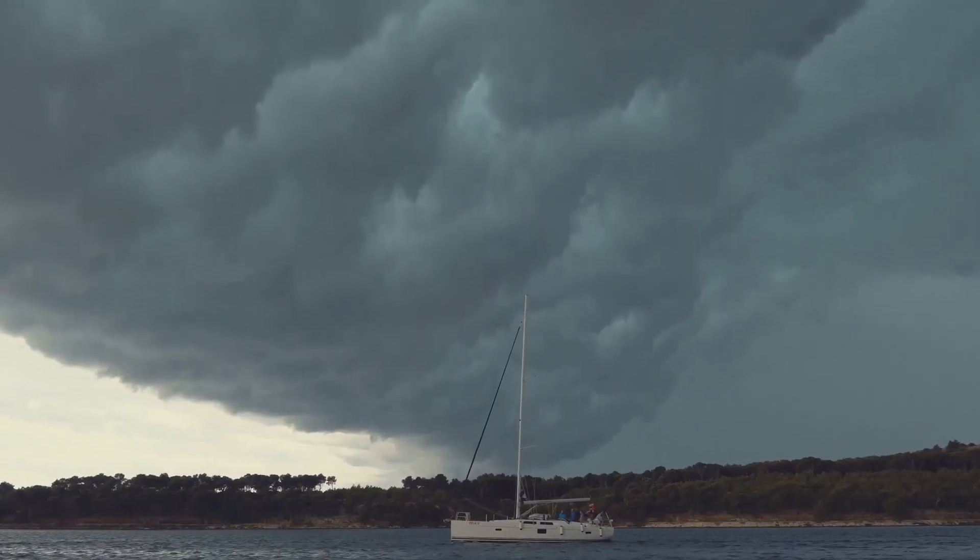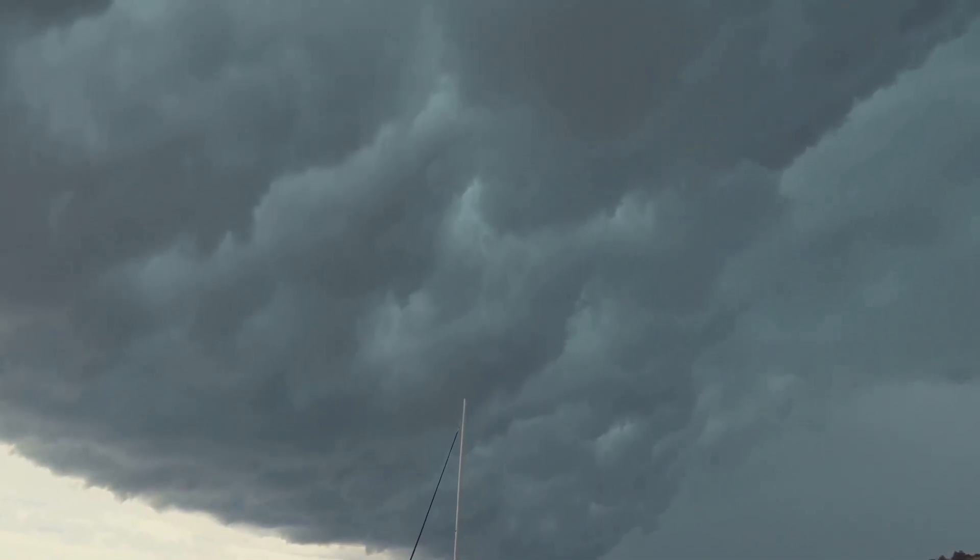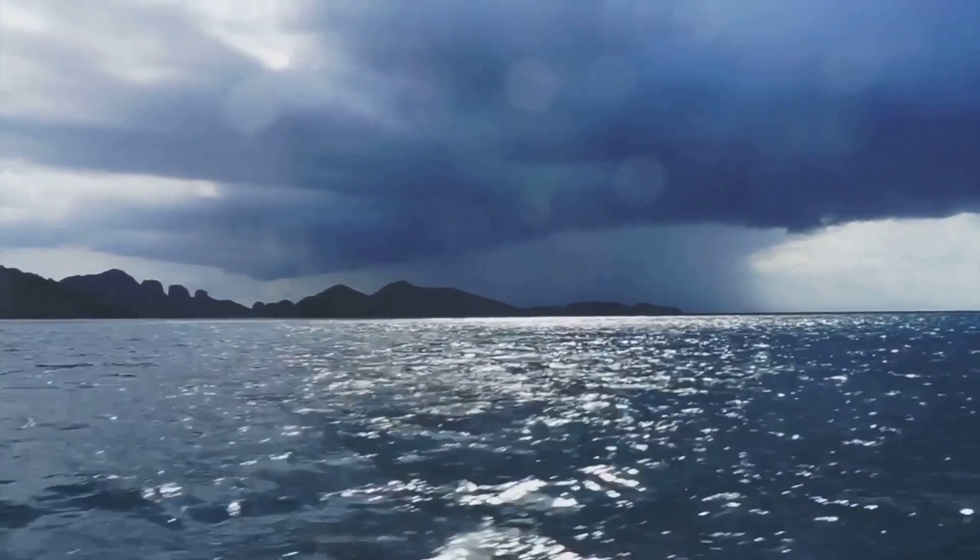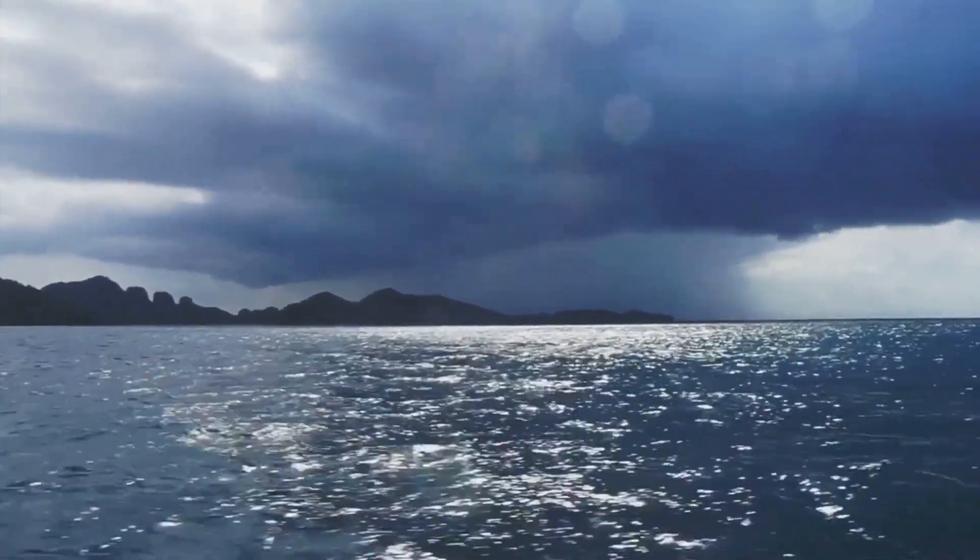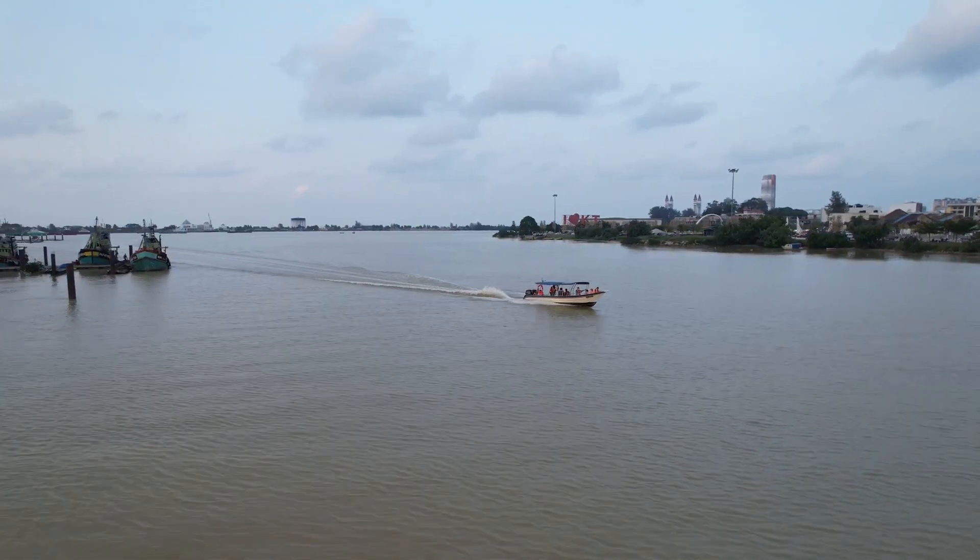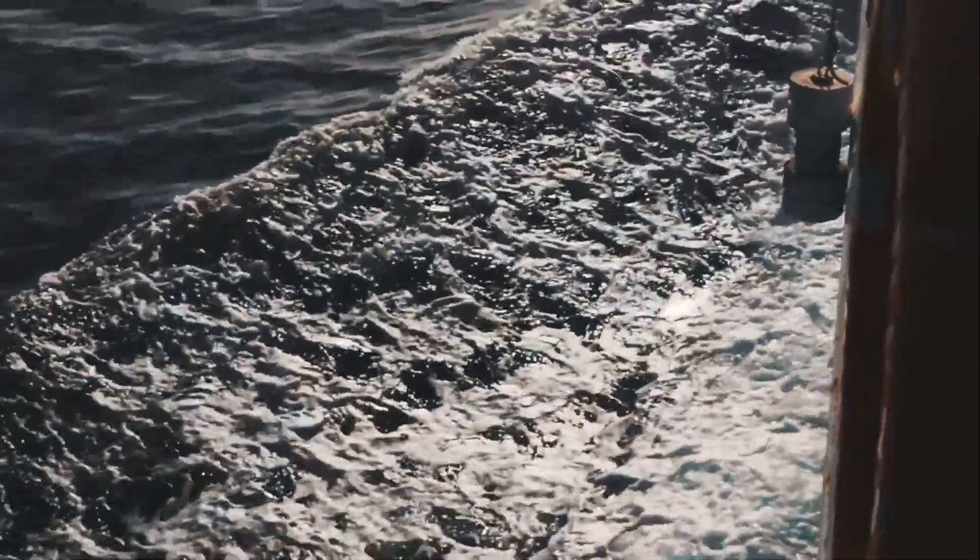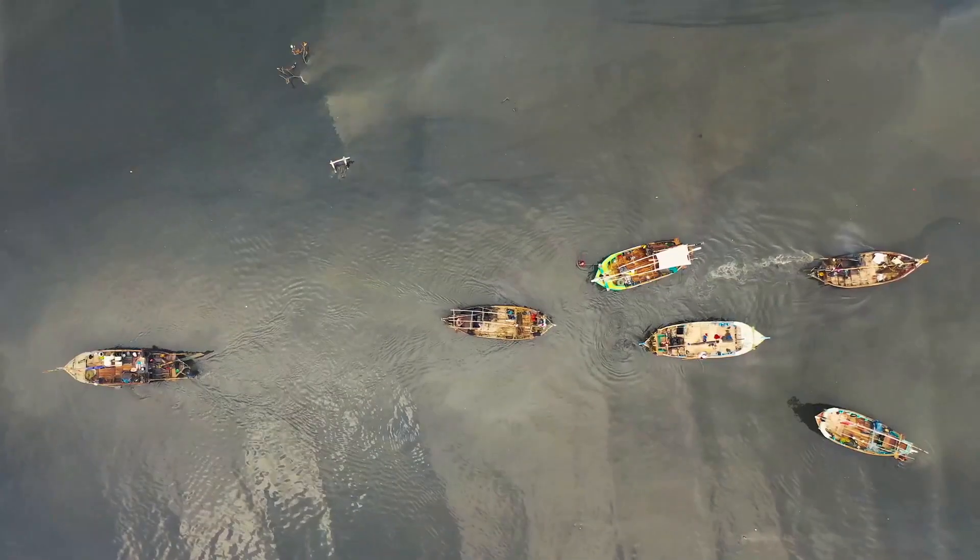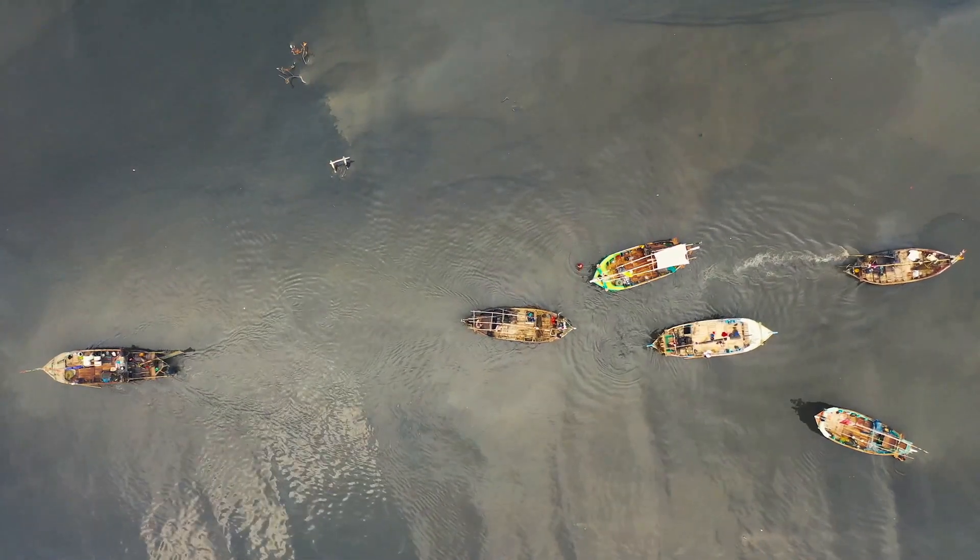In the standard Copenhagen interpretation of quantum mechanics, the boat's position is described as a probability cloud, spread out over the entire river. It's only when we observe the boat, making a measurement, that the probability cloud collapses, and the boat chooses a definite position. Pilot wave theory, in contrast, offers a more intuitive picture. The boat always has a definite position, even when we're not looking.